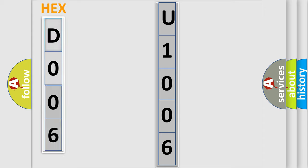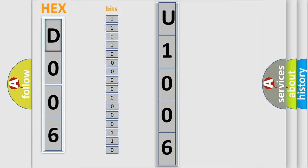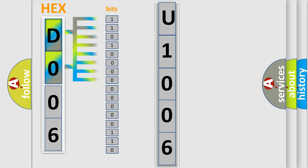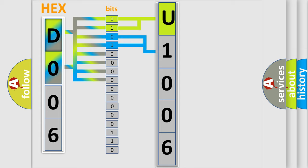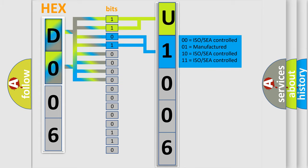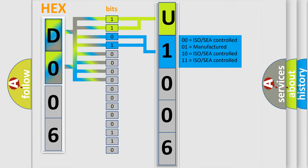The error code is split into two bytes consisting of 16 bits. One bit is the basic unit that each computer works with. The bit has two logical states: zero, which is low level, and one, which is high level. By combining the first two bits, the basic character of the error code is expressed. The next two bits determine the second character. The last bits of the first byte define the third character of the code.